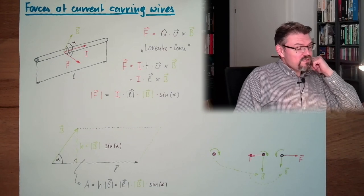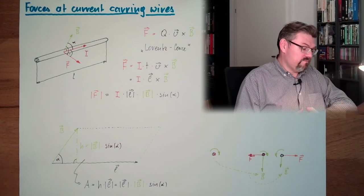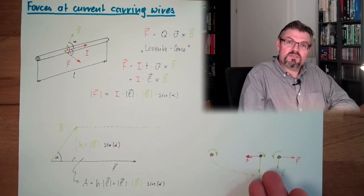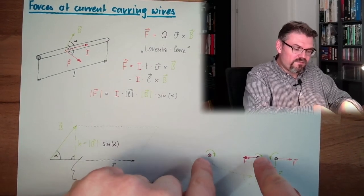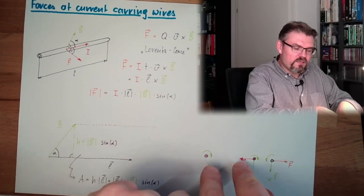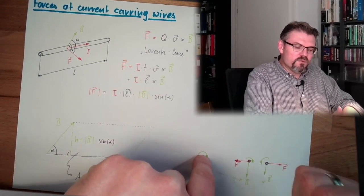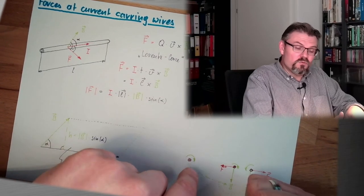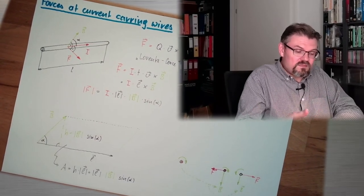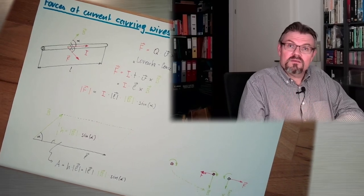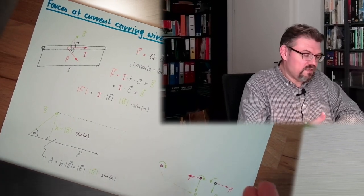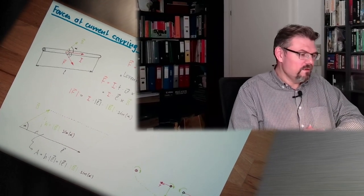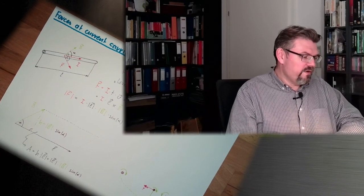Forces at current carrying wires. And this is actually what Ampere found out. This is exactly what we've seen. That two wires, which have the same direction, they will attract each other. Two wires, which have opposite direction, they will distract each other. And this was Ampere's finding, simply. He has experienced the Lorentz force. The forces at current carrying wires.